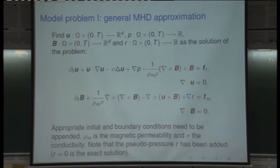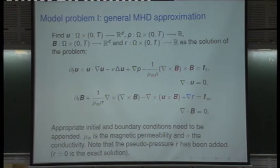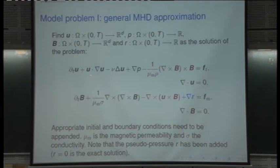The exact equations are those written in black and red: Navier-Stokes affected by the magnetic field via the Lorentz force, and the equation for the magnetic field affected by the velocity via the induced current. The coupling is clear: velocity affects the magnetic field and the magnetic field affects the velocity.